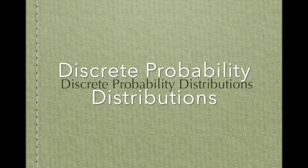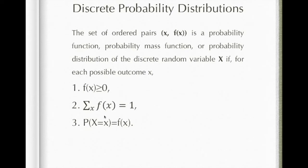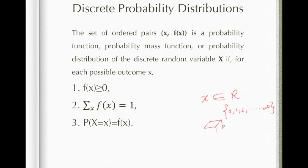Now let's look in detail at the discrete random probability distribution, which is based on the possibility of occurrence of all values of the random variable over the sample space. If x is a random variable belonging to a sample space r, the possibilities may range from zero, one, two, and so on to infinity, or there can be limited possibilities — for example, if we toss a dice, which has six possibilities: one, two, three, four, five, and six.